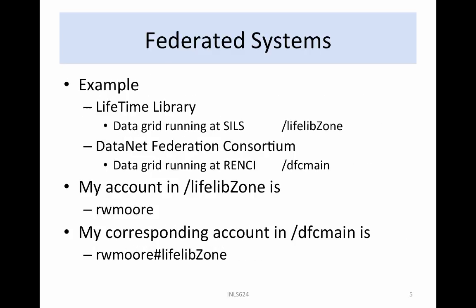An example of two federated data grids is the federation of the Lifetime Library with the DataNet Federation Consortium. The Lifetime Library has a data grid running at SILS with the zone name LifeLibZone. All logical path names in the Lifetime Library data grid start with the zone name LifeLibZone.